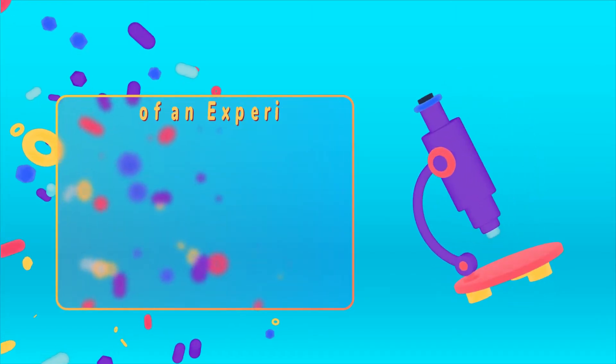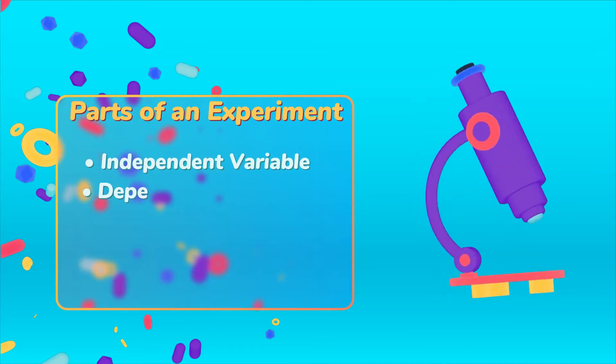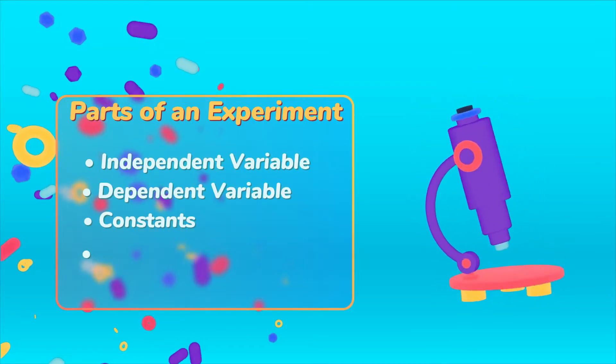So the parts of an experiment include the independent variable, dependent variable, constant, and control.